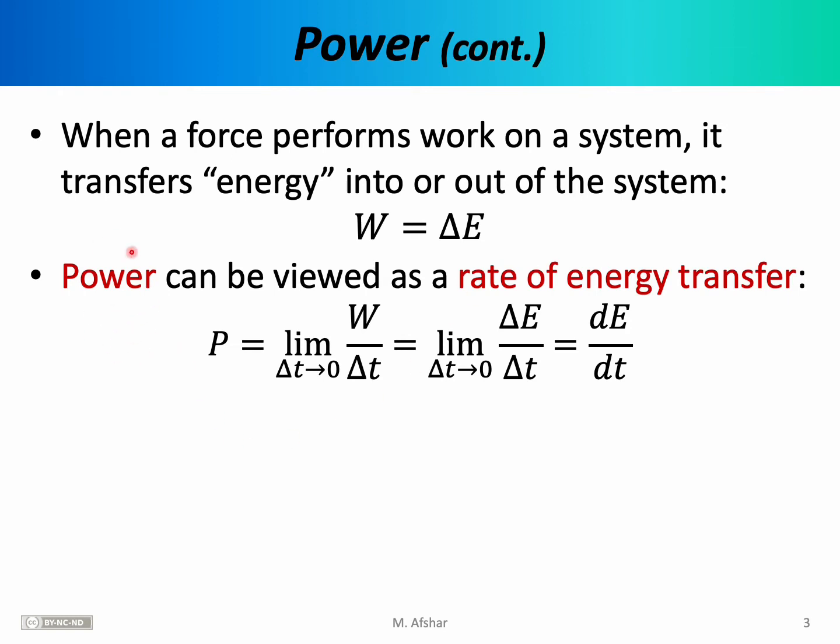This identification between work and changes in energy gives us a new definition of power. We defined power as the rate at which work was performed. Now we can define power as the rate of energy transfer. Power is equal to work divided by time in the limit as this time goes to zero. We're replacing work with a change in energy. From your calculus class, you should remember that delta E over delta T in this limit is simply a derivative. So our most general definition of power refers to the derivative of E with respect to time.